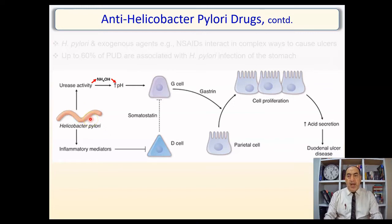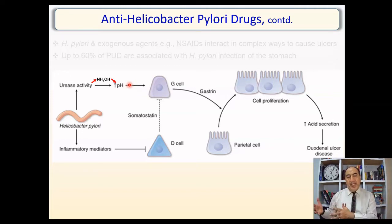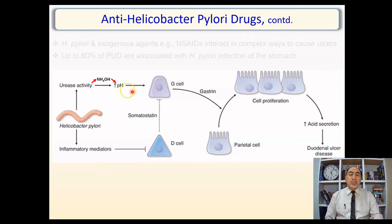This diagram shows how H. pylori acclimatizes to the harsh environment and attacks surrounding gastric tissues. H. pylori produces an enzyme called urease, which degrades urea and produces ammonium hydroxide — pH about 10, so it's basic. This increases the local pH, meaning the bacterium ensures it is surrounded by a favorable, almost neutral pH of about 6–7, balancing the ammonium hydroxide against the HCl at pH 1–2.